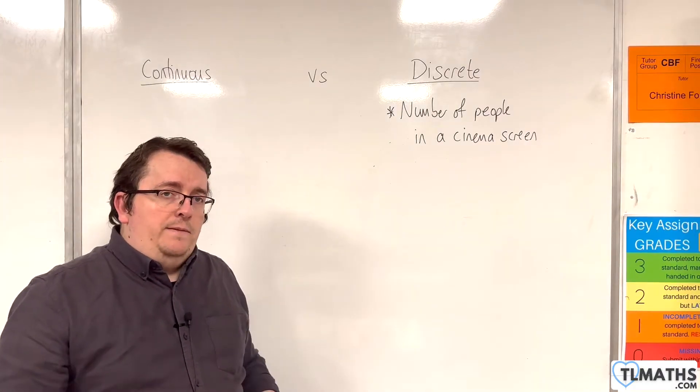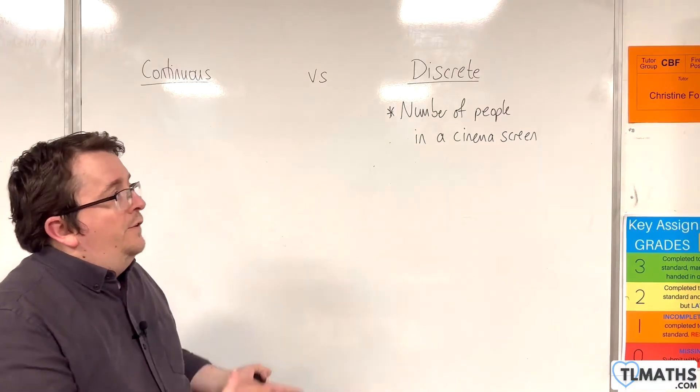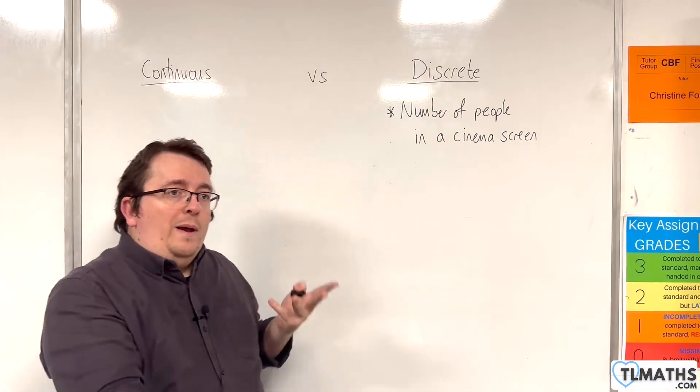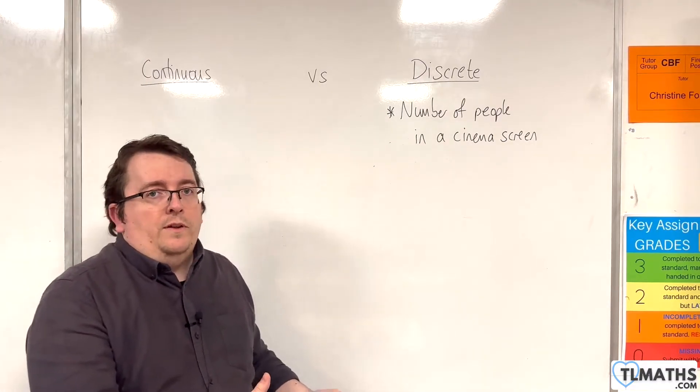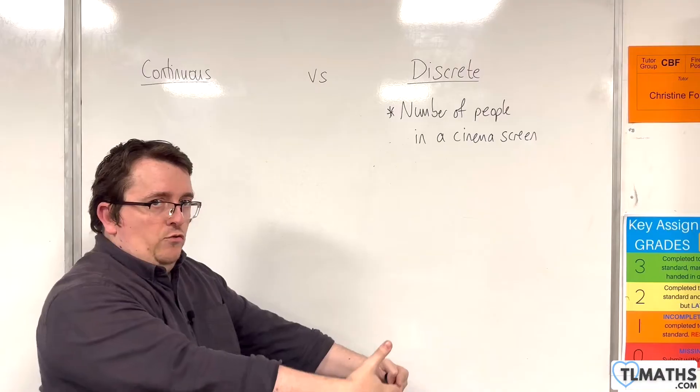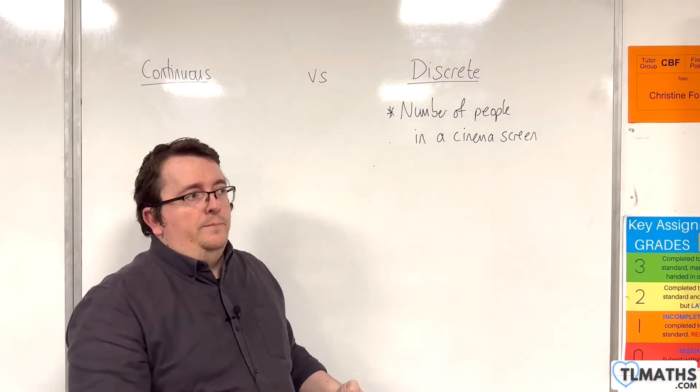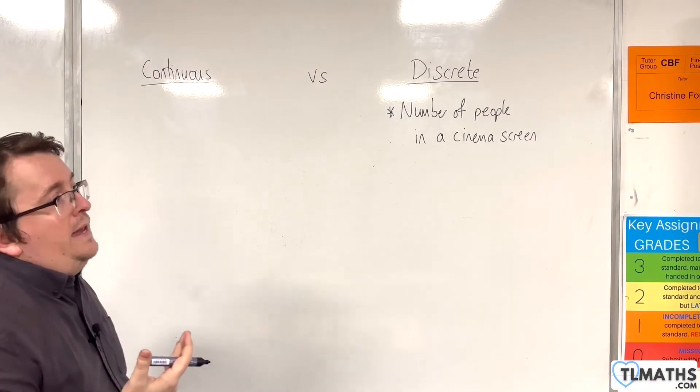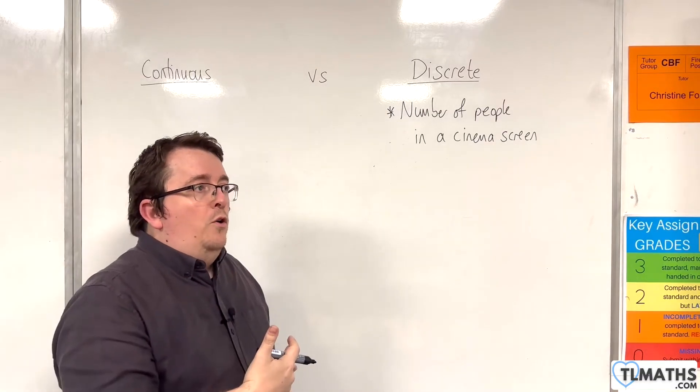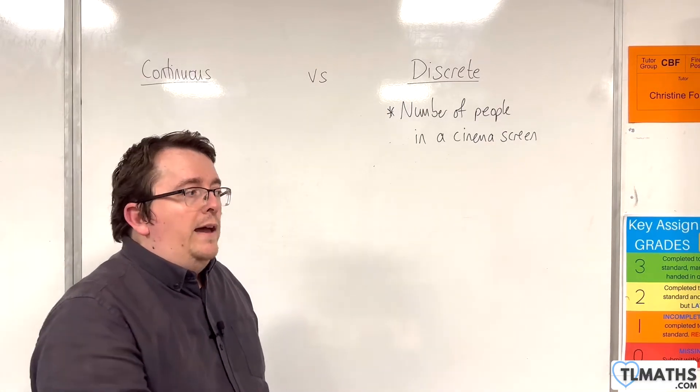I can count the number of people that are there. You wouldn't have 25.7283 people there. So it comes into discrete categories of how many people were there. It could also be the number of languages that you know.